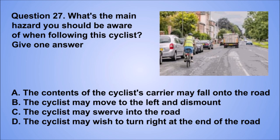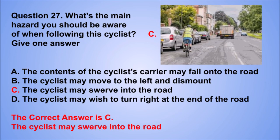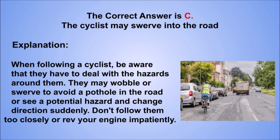Question 27. What's the main hazard you should be aware of when following this cyclist? Give one answer. A. The contents of the cyclist's carrier may fall onto the road. B. The cyclist may move to the left and dismount. C. The cyclist may swerve into the road. D. The cyclist may wish to turn right at the end of the road. The correct answer is C, the cyclist may swerve into the road. When following a cyclist, be aware that they have to deal with the hazards around them. They may wobble or swerve to avoid a pothole in the road or see a potential hazard and change direction suddenly. Don't follow them too closely or rev your engine impatiently.